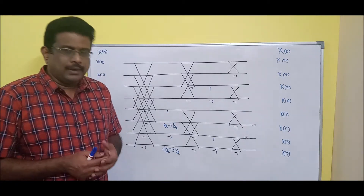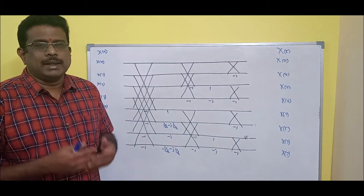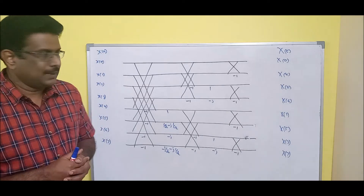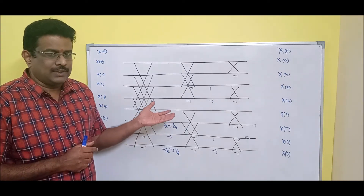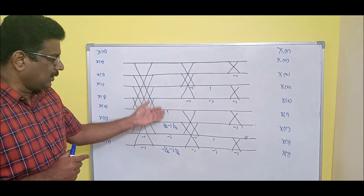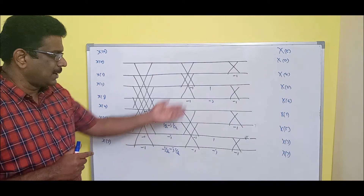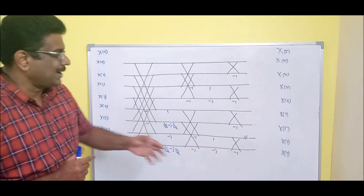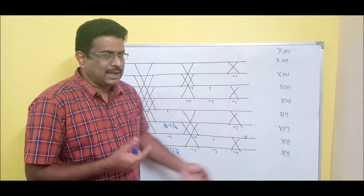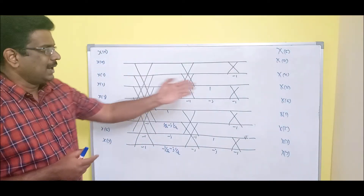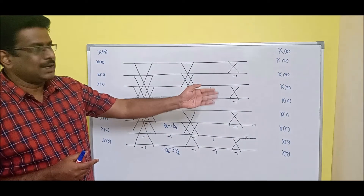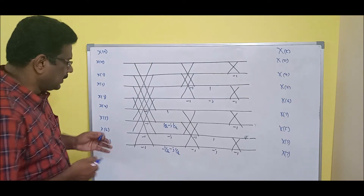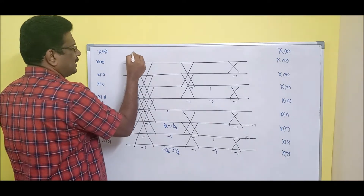Welcome back. In the last session we did DIF FFT derivation, and at the end of the derivation we got a particular diagram with the exact twiddle factor values. x of n and x of k — one said it should be decimated, the other said it is direct. So remaining calculations are one and the same.